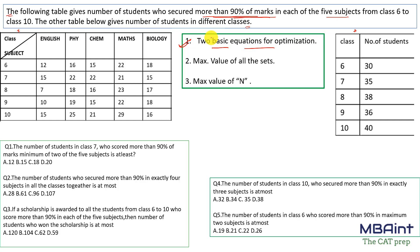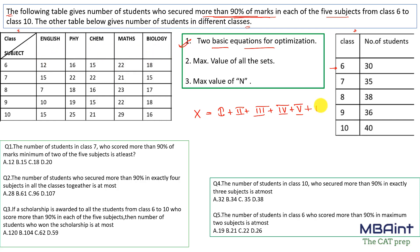The first equation: X, which is the total number of students for a particular class, equals exactly 1 + exactly 2 + exactly 3 + exactly 4 + exactly 5 (since we have 5 sets) plus N. Here N is the number of students who do not score 90 percent or more in any of the subjects.